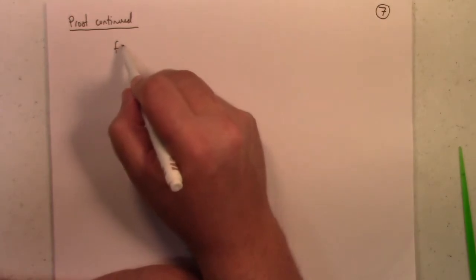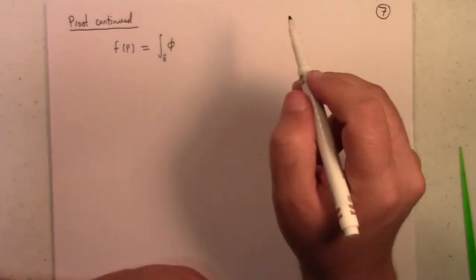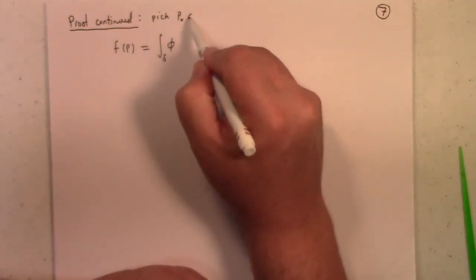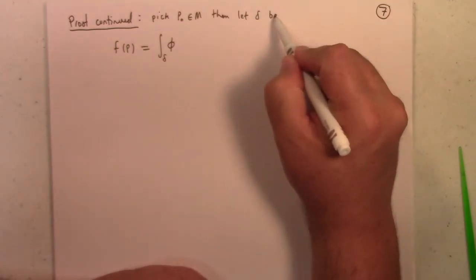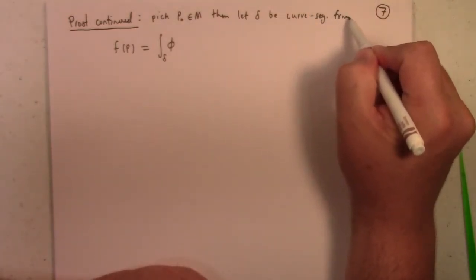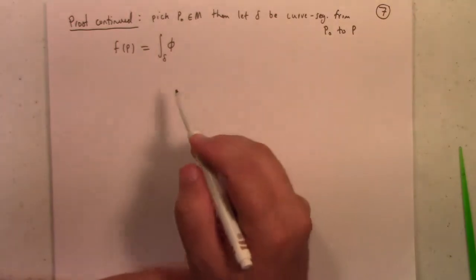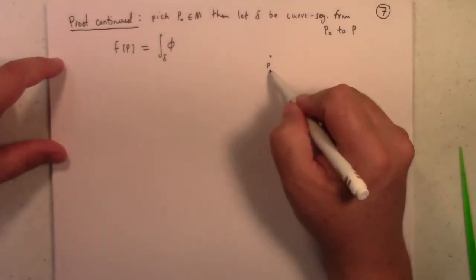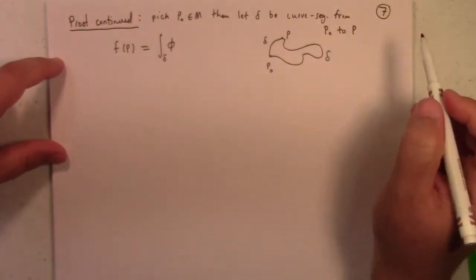In particular, we define F of P as being the integral over delta of phi. Now what is delta? I should say first, before I do that really, I should say pick a point, P not in M, and then let delta be a curved segment from P not to P. And so we define F of P by that. And the function is well defined because it doesn't matter which path you go from P not to P. I could call this thing delta, but I could just as well call this delta. It doesn't matter. Either is going to give me the same result.